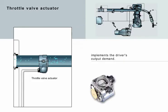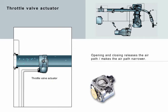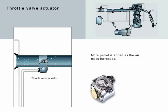The engine control unit passes on the driver's demand for increased engine output via the throttle valve actuator. The air path in the intake pipe is opened or narrowed by opening or closing the throttle valve. The more air can flow through — that is, the more the vehicle is accelerated — the more petrol is added to the mixture, causing the engine to operate more quickly and powerfully.